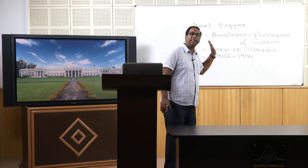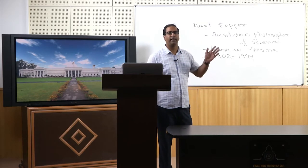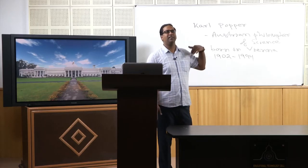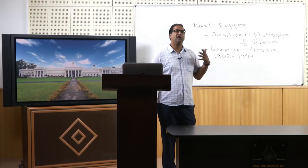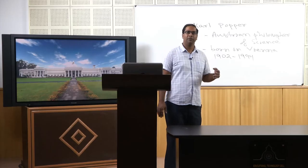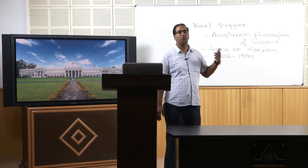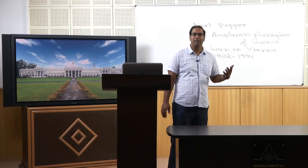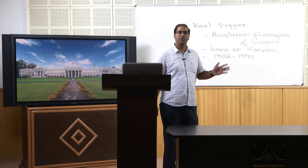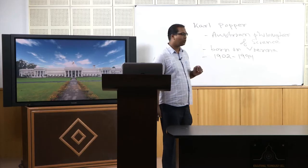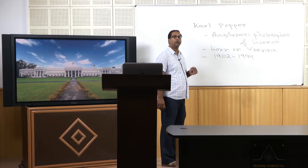He is an Austrian philosopher, born in Vienna. His time period is 1902 to 1994, meaning his active academic life coincided with significant social, economic, political, and historical changes in the twentieth century, and he was also responding to that. He was not only a philosopher of science but also a political scientist and social philosopher, having written books in the field of social philosophy.